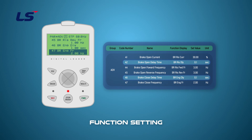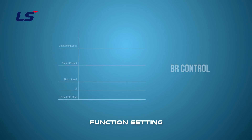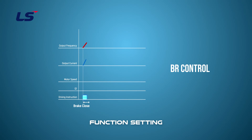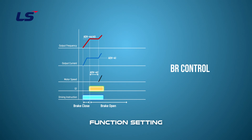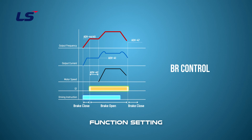Delay time parameters for brake open and close can be set according to the load characteristics. The BR control function opens the machine brakes by ON output signal when the motor reaches the open frequency and the output current reaches the set percent when the operation command is entered. When the closing frequency is reached after the operation command is off, the brake output terminals are turned off and the machine brakes are closed.